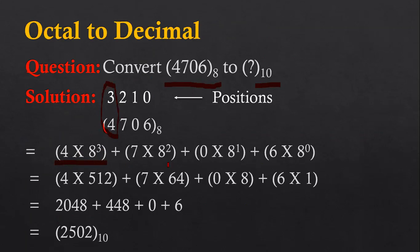Similarly, 7 is multiplied by 8 raised to 2. Then 0 is multiplied by 8 raised to 1, and 6 is multiplied by 8 raised to 0. Finally, their multiplication results are added and the final result is 2502 with base 10.